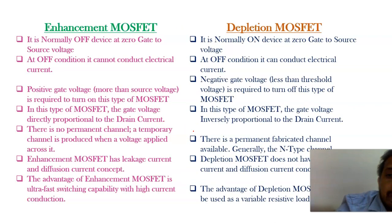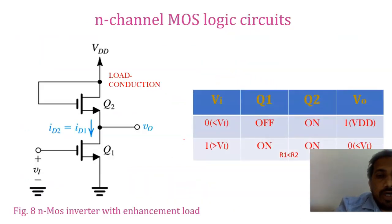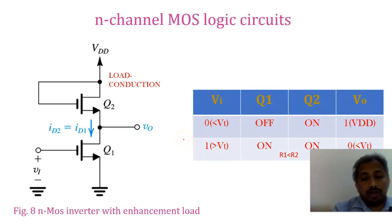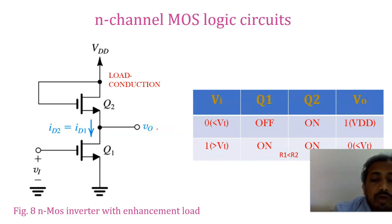Here you can see a classification overview of enhancement and depletion MOSFETs and how they relate to each other in circuit representation. Now, coming to the first design using N-channel MOSFETs — the construction of an inverter. One important thing to remember: whenever you give a positive supply, the N-channel MOSFET is ON; when you give 0 volts, the NMOS is OFF.